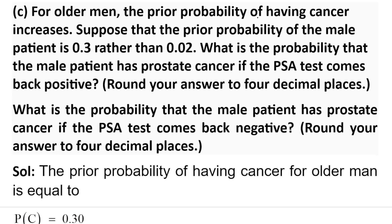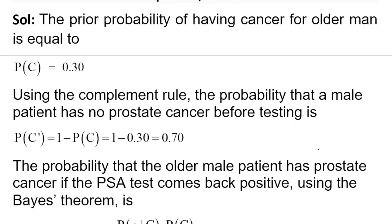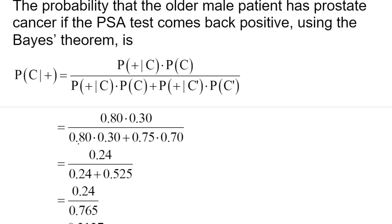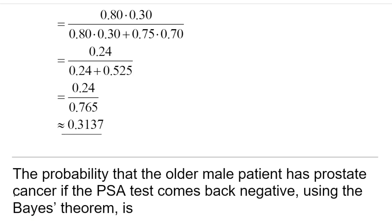In Part C, we will consider older men. For older men, the probability that a male patient has prostate cancer is 0.3, so our probability of event C becomes 0.3. The conditional probabilities remain the same as in Parts A and B. Using the complement rule, the probability that an older male patient has no prostate cancer before testing is 0.70. Using Bayes' theorem, the probability that an older male patient has prostate cancer given that the test comes back positive is 0.3137.